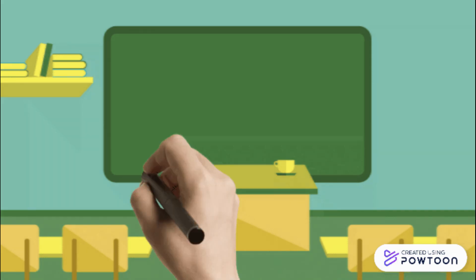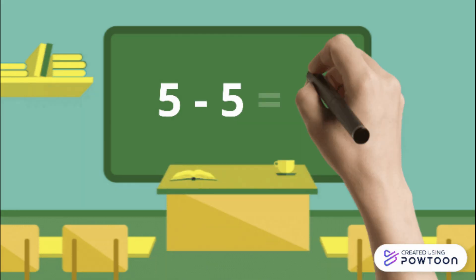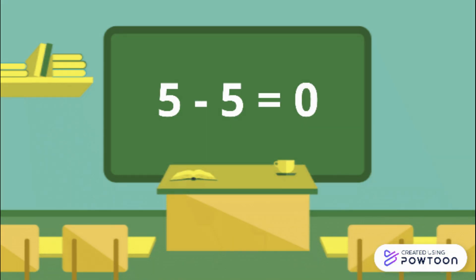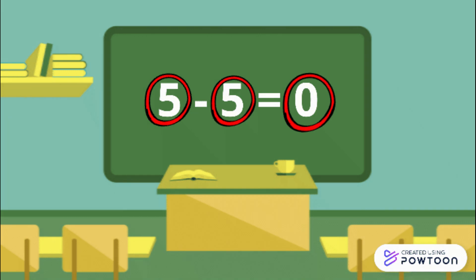Now, here's a quick recap. Five minus five equals zero, because when we take away everything, we are left with nothing. So five minus all, or all the five, will equal to zero.